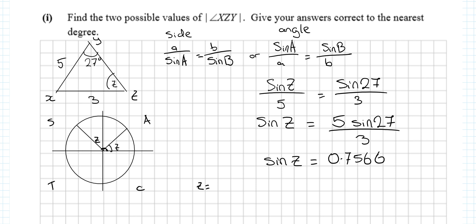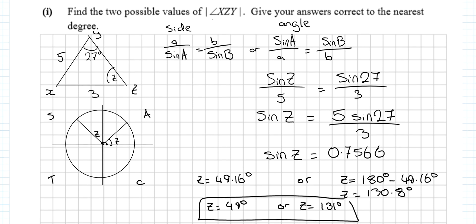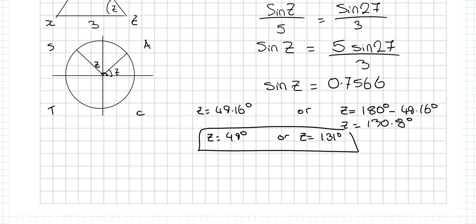Z is either sin⁻¹(0.7566) = 49.16°, or the second-quadrant solution: 180° − 49.16° = 130.84°. Giving your answer to the nearest degree: the measure of angle XZY = 49° or 131°.